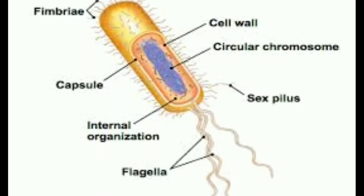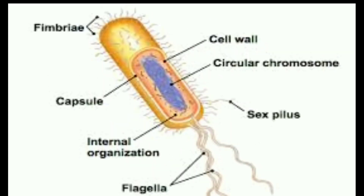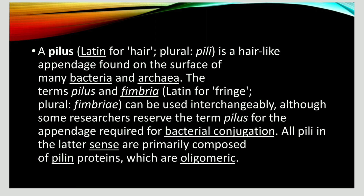A bacterial cell has several surface appendages: flagella, fimbriae, and pili. Pili are much longer and broader in length, whereas fimbriae are shorter and narrow. In Latin, the word means 'hair' — they are hair-like appendages seen on the surface of many bacteria and archaea.